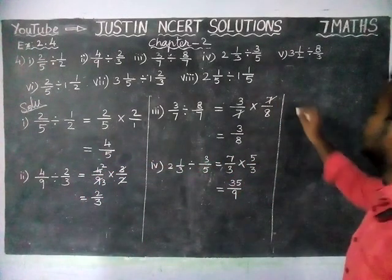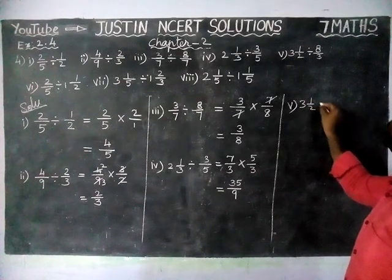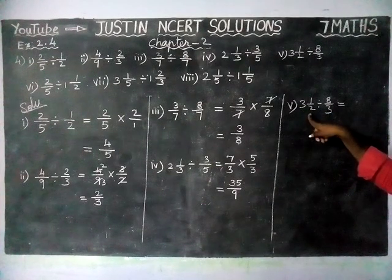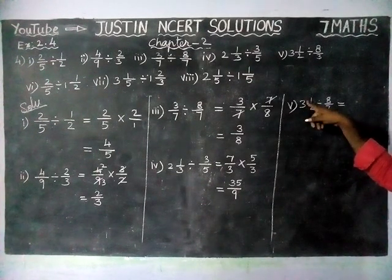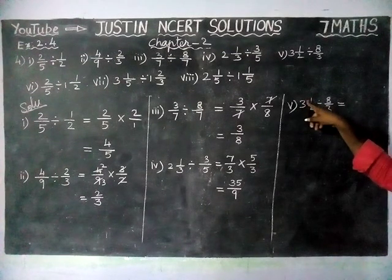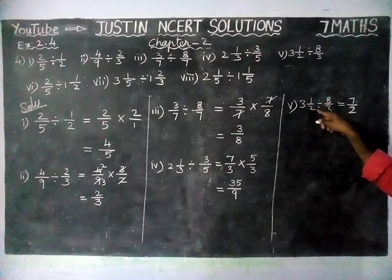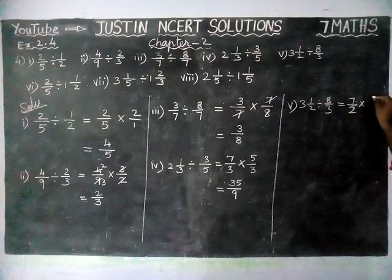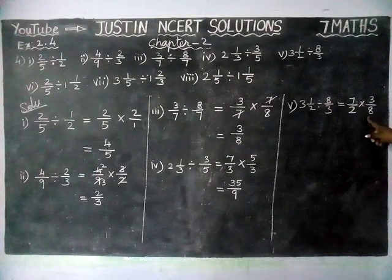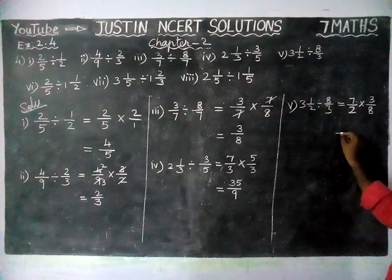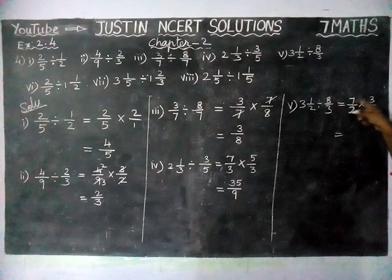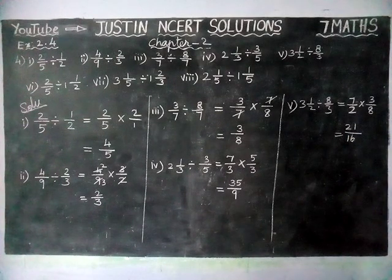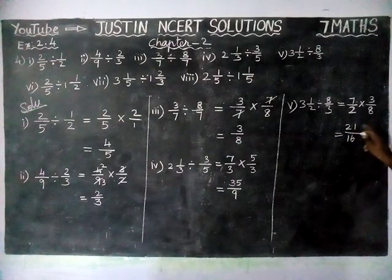Fifth question: 3½ divide 8/3 is equal to — we have to convert this mixed fraction into improper fraction. Whole part into denominator plus numerator: 3 times 2 is 6, 6 plus 1 is equal to 7. So, 7/2 — and the division is converted into multiplication, and 8/3 becomes its reciprocal 3/8. We don't have any common divisor, so we multiply numerator into numerator, denominator into denominator: 7 times 3 is 21, divided by 2 times 8 is 16. So, the answer for the fifth question is equal to 21/16.